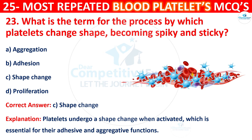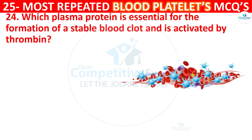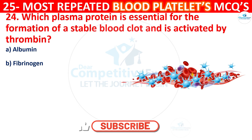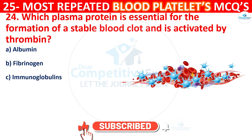Question 24. Which plasma protein is essential for the formation of a stable blood clot and is activated by thrombin? The options are: albumin, fibrinogen, immunoglobulins, or clotting factor 8.